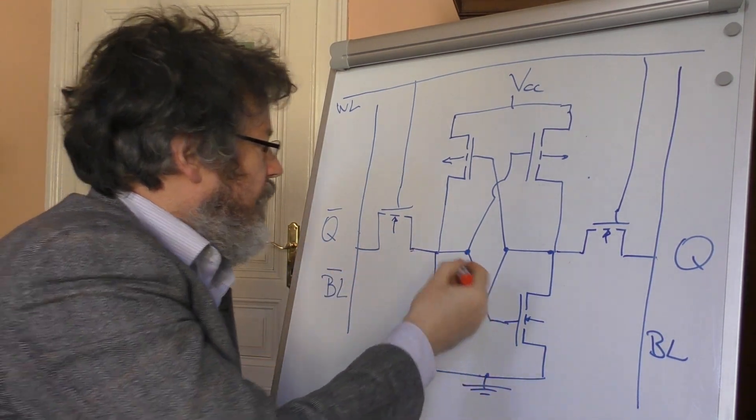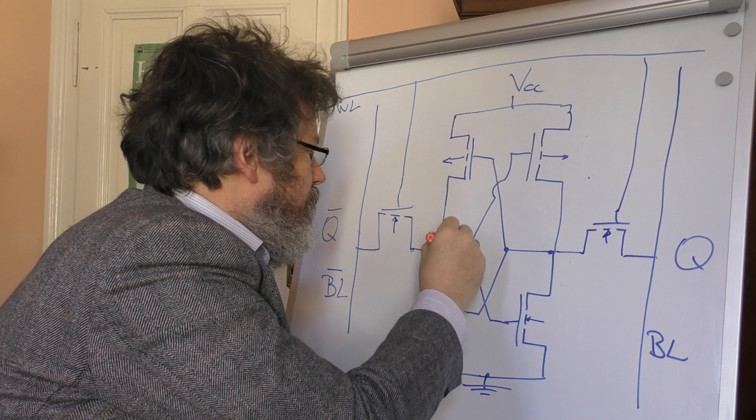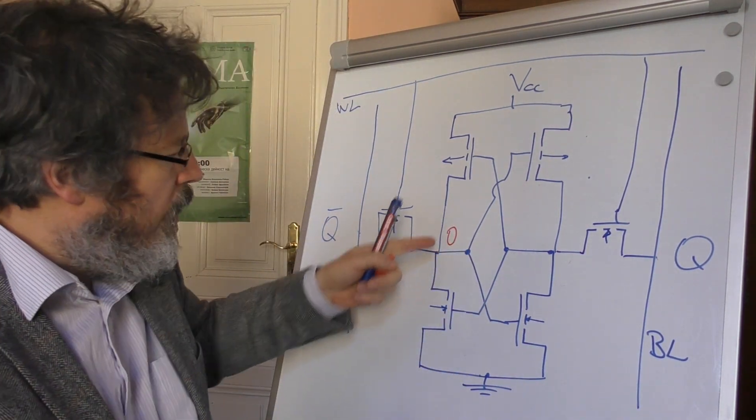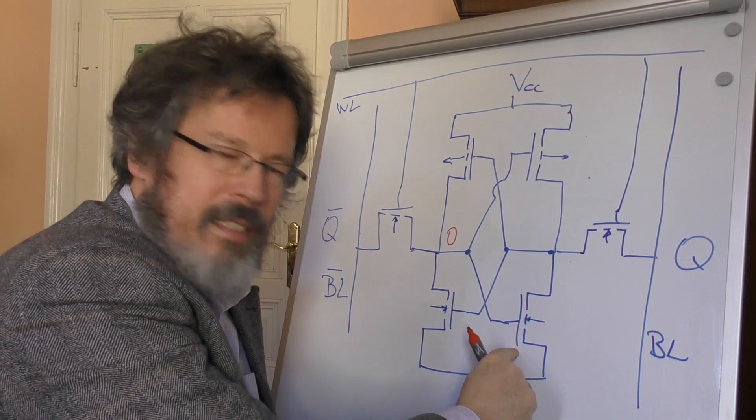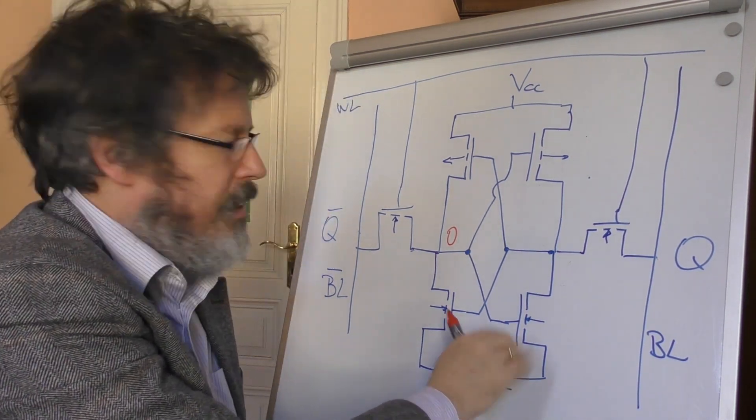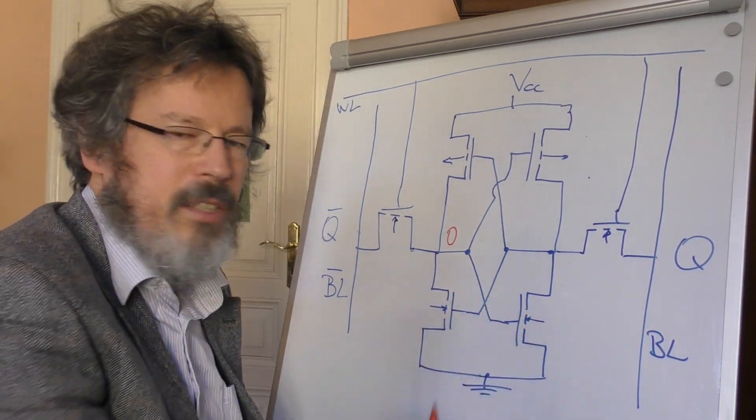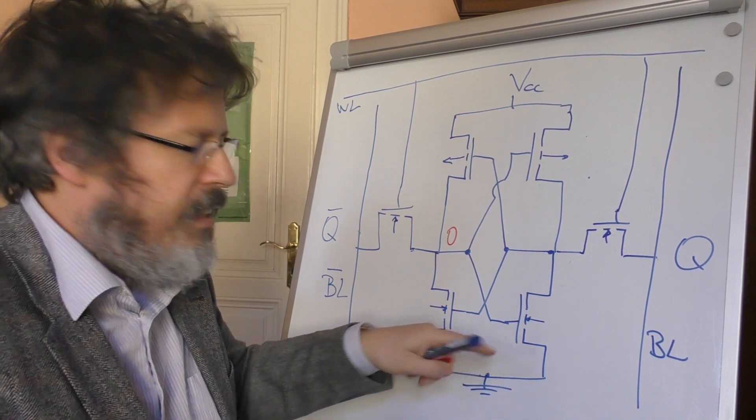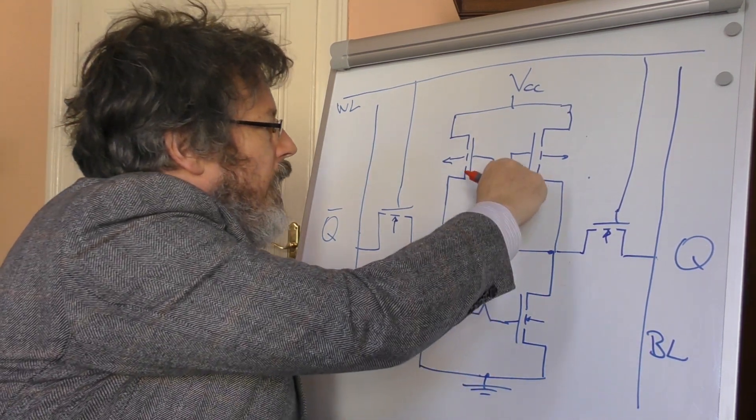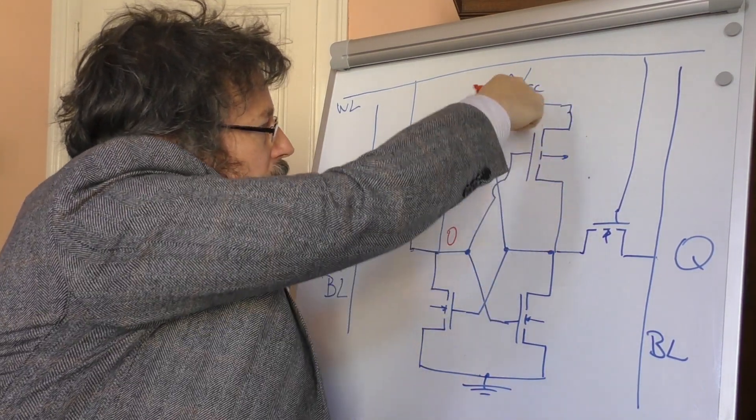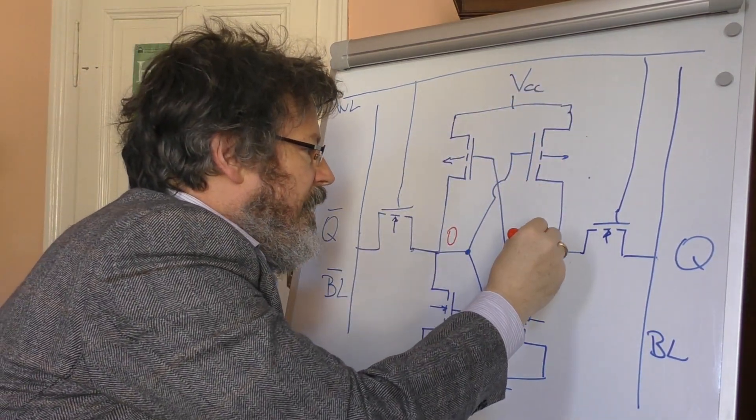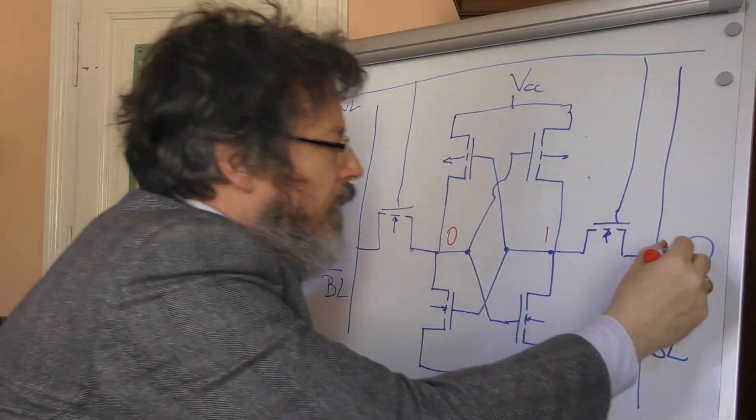With two PMOS transistors, and these gates are now in turn connected to these states here. And if you think about this more carefully, let's take a simple case again: assume we have a 0 at this point. This 0 switches this NMOS transistor off. When the gate of an NMOS is at 0, it blocks. At the same time, however, it opens this PMOS transistor up here, so that from the supply voltage a 1 comes down to this point here.